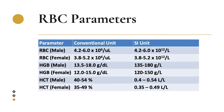Now let's move on to our RBC parameters. The RBC count for males has a reference value of 4.2 to 6.0 times 10 to the 6 cells per microliter, while for females the reference value is 3.8 to 5.2 times 10 to the 6 cells per microliter. In SI units, the values are the same but the unit is 10 to the 12 cells per liter. For hemoglobin, males have a reference value of 13.5 to 18 grams per deciliter, and females 12 to 15 grams per deciliter. In SI units, 135 to 180 grams per liter for males and 120 to 150 grams per liter for females.